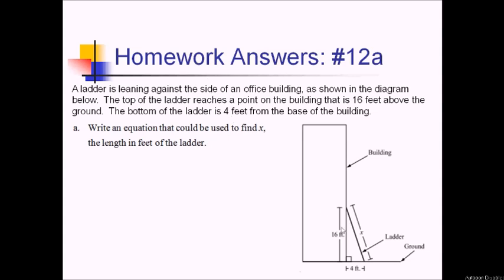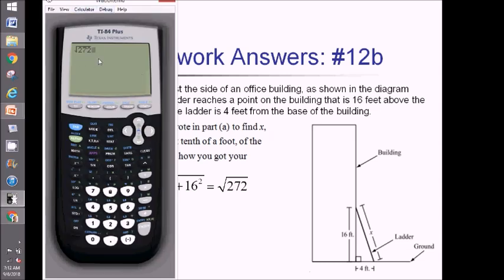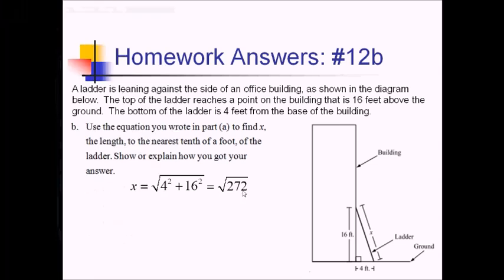For number 12, we have a ladder leaning against the side of an office building. The top reaches 16 feet above the ground and the bottom is 4 feet from the base. Part a: write an equation to find x, the length of the ladder. This is a right triangle, so a squared plus b squared equals c squared. The hypotenuse is x, so we write 4 squared plus 16 squared equals x squared. For part b, we find x: the square root of 4 squared plus 16 squared, which is the square root of 16 plus 256, or the square root of 272. That gives us approximately 16.5 feet.